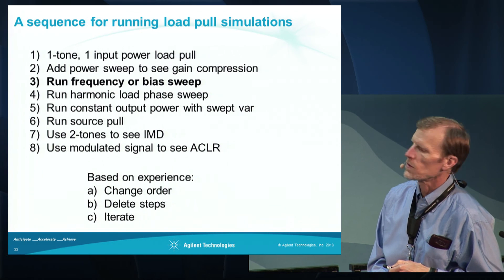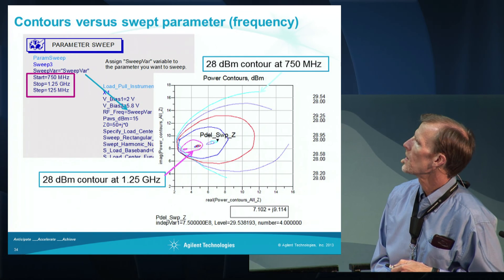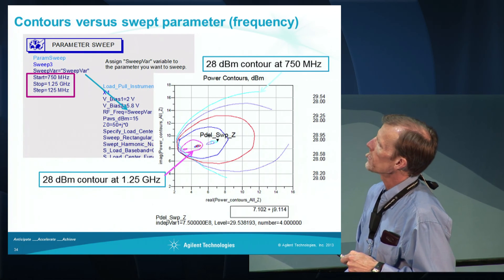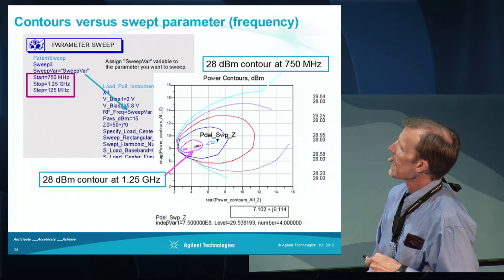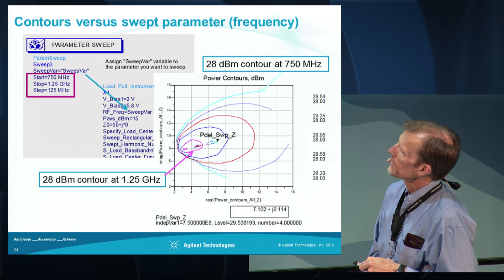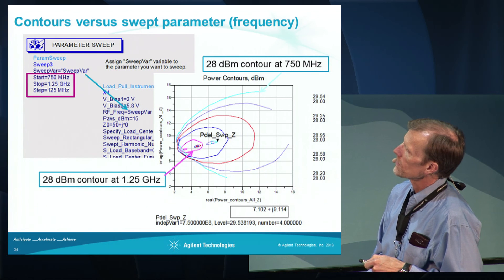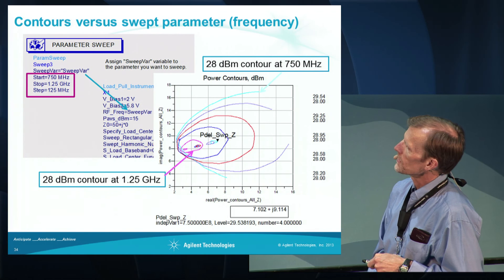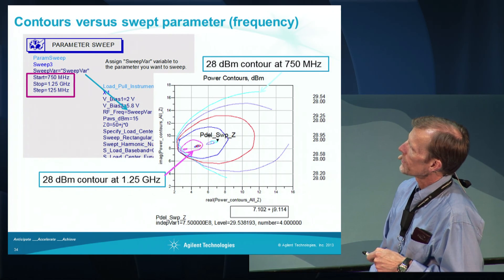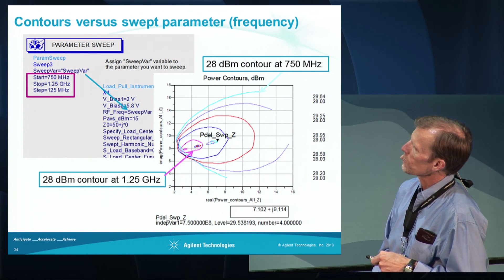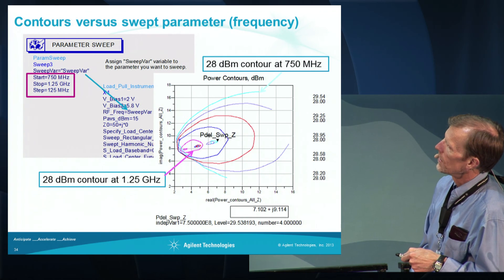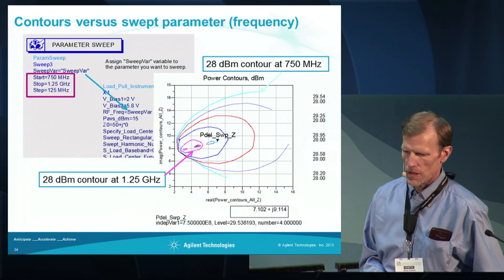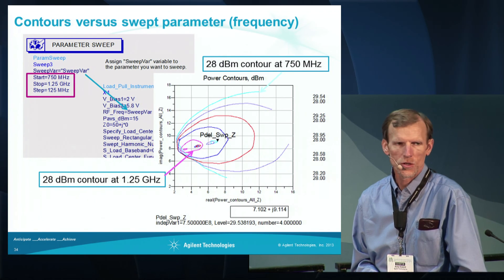It's possible to run a frequency or a bias sweep. In this case, I'm showing contours for power delivered at 28 dBm and at the maximum. I did a sweep of the frequency from 750 megahertz to 1.25 gigahertz. What this shows is how much smaller the 28 dBm contour becomes when you go from 750 megahertz to 1.25 gigahertz. You can see that the matching problem becomes more difficult as you go up in frequency.